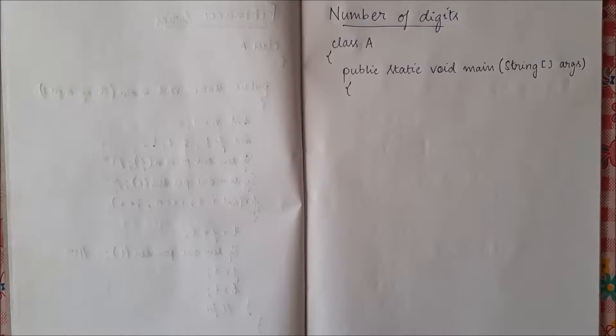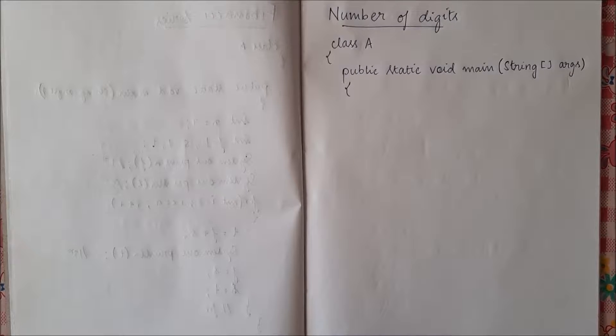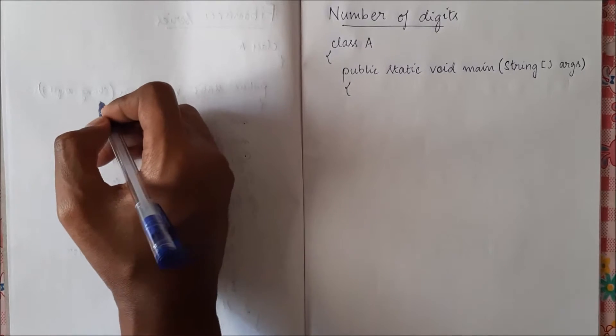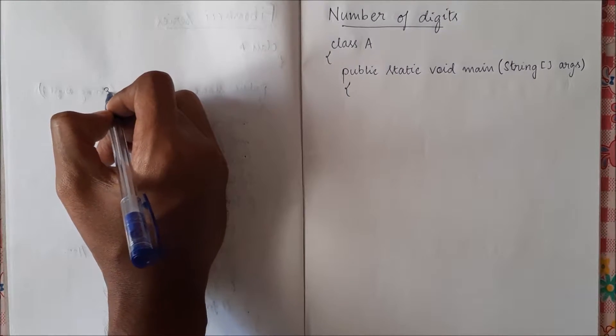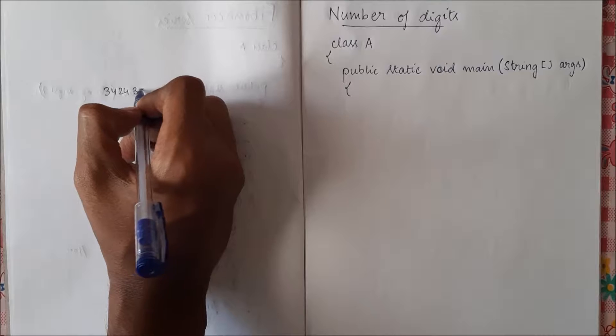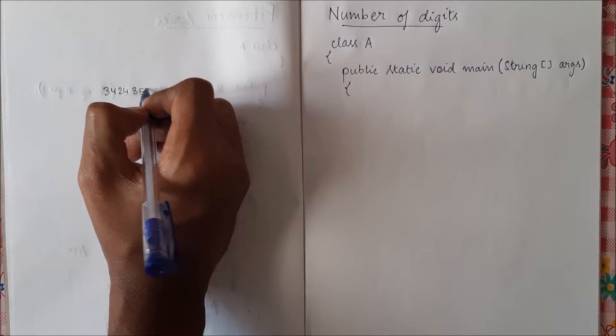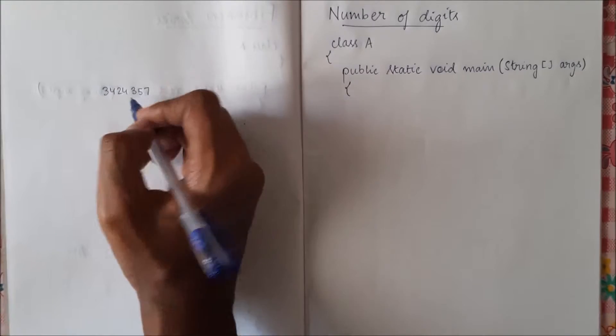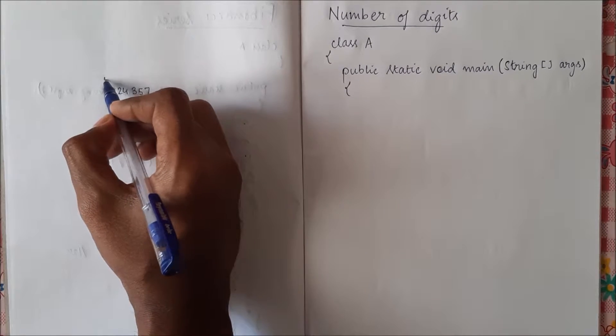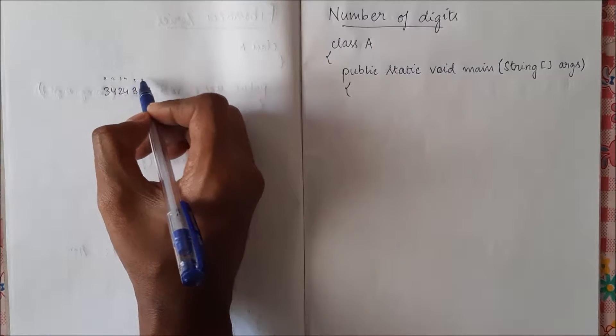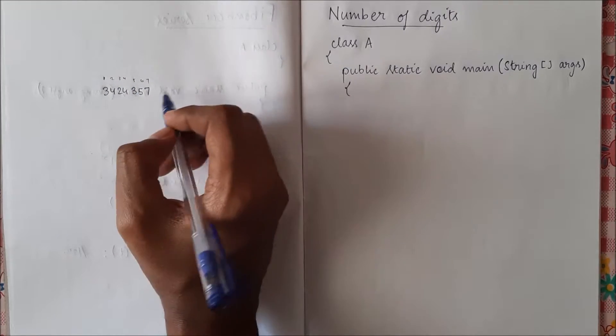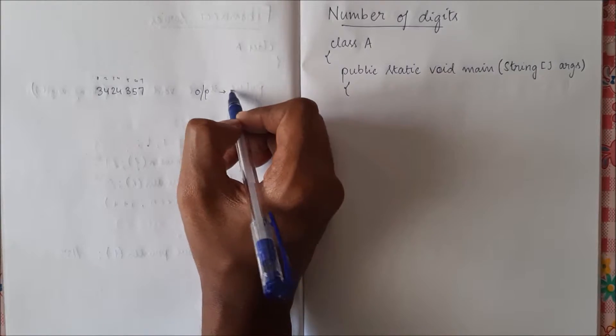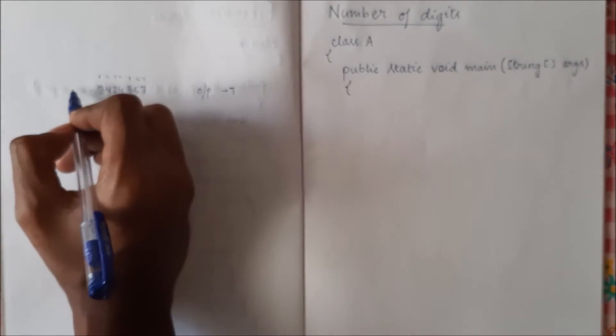Hello, in this program let us learn how to find or count the number of digits in a given number. So let's say we have a number, we have to count how many digits this number has. If we manually count 1, 2, 3, 4, 5, 6, 7, so our output should be 7 for this input.